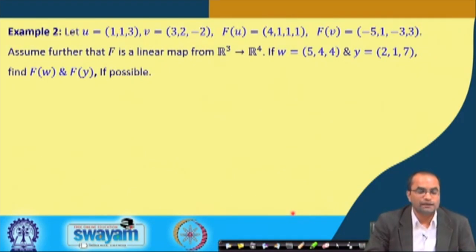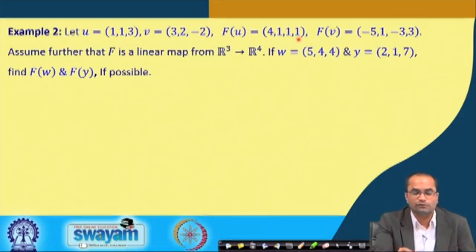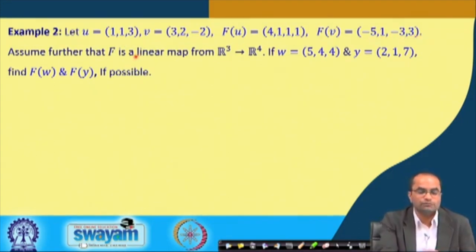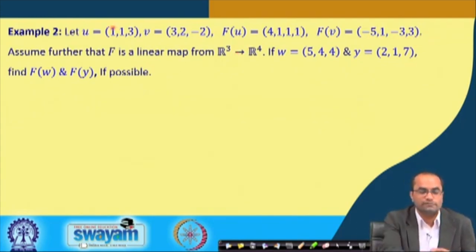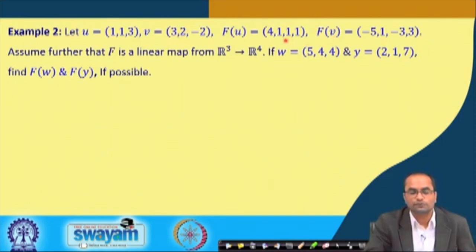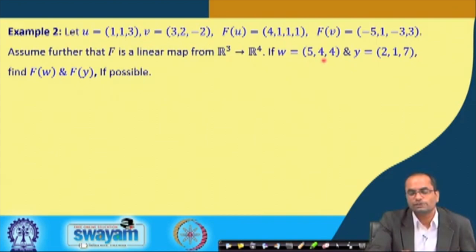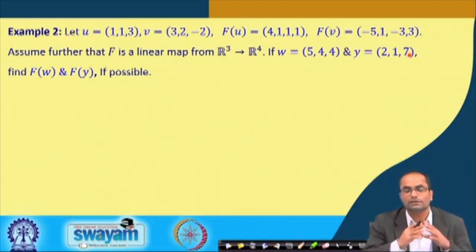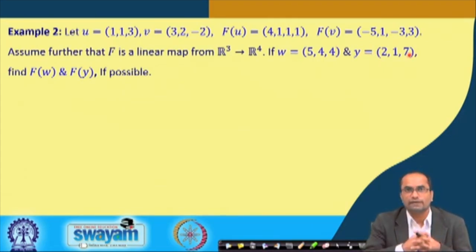In the next example, we are given vectors u and v, and that f(u) = (4,1,1,1) and f(v) = (−5,1,1,−5,1,−3,3). We assume f is a linear map from R³ to R⁴. If w = (5,4,4) and y = (2,1,7), we want to find f(w) and f(y).